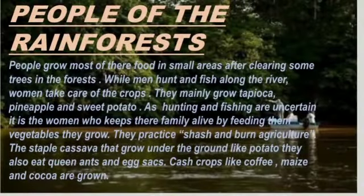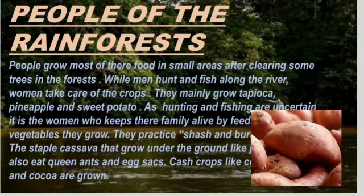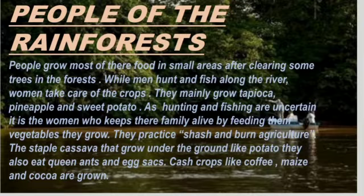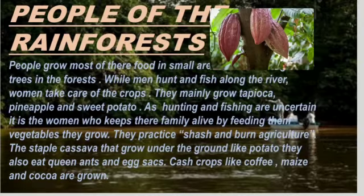People of the Rain Forest. People grow most of their food in small areas after clearing some trees in the forest. Men hunt and fish along the river. Women take care of the crops; they mainly grow tapioca, pineapple, and sweet potato. As hunting and fishing are uncertain, it is the women who keep their family alive by feeding them the vegetables they grow. They practice slash and burn agriculture. The staple cassava grows under the ground like potatoes. They also eat queen ants and egg sacs. Cash crops like coffee, maize, and cocoa are grown.